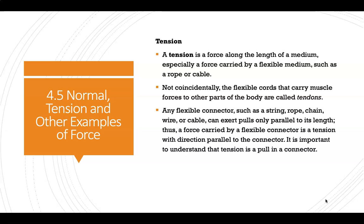Another force we want to talk about is tension. Tension is a force that is carried along something. You cannot have tension unless there is a connection between two objects or two parts. A lot of times it's going to be a rope or a cable. The tension in a rope is caused by the weight that pulls down on it — either the weight of the rope itself or the weight of the thing attached to the rope — and that causes the tension in that object to exist. A really good example in the body are tendons, which are connected to your bones and muscles and carry forces from one part of the body to another — those are all types of tension.